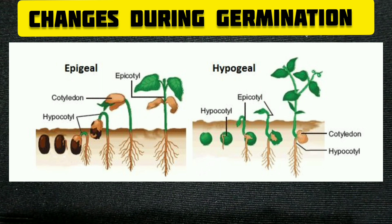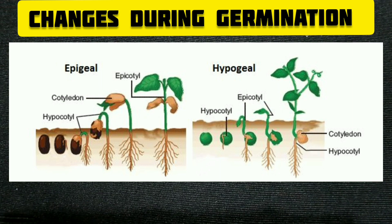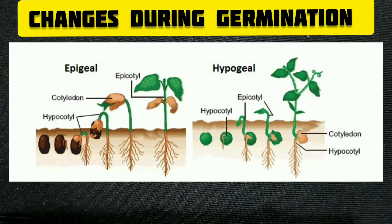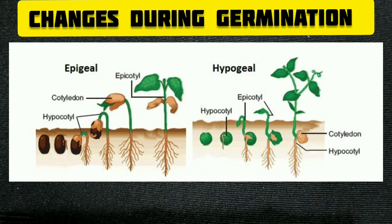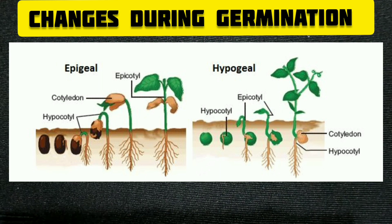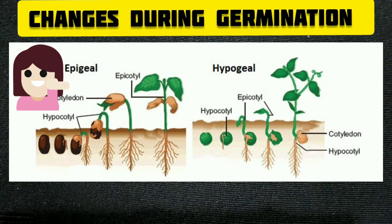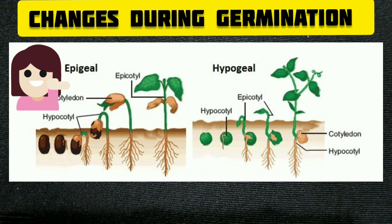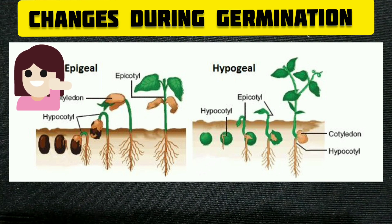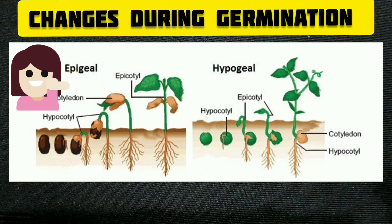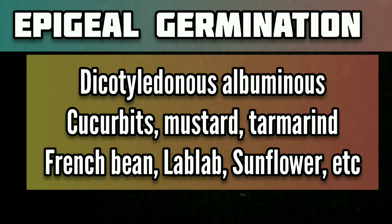In monocots, however, the hypocotyl does not grow, but the epigenous and hypogenous nature is determined by the growth of the cotyledon itself. In this tutorial, we are describing epigeal germination only, and hypogeal germination will be discussed in our next video.